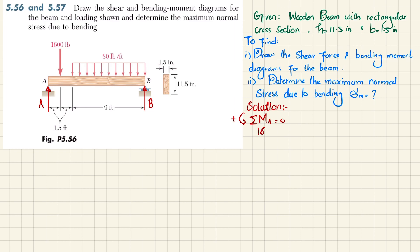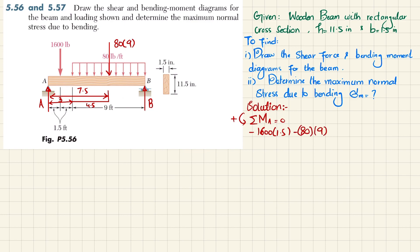Writing the moment equation: minus 1600 times 1.5 (the point load), minus 80 times 9 times 7.5 (the distributed load converted to a point load with its centroid at 7.5 feet from A), plus B times 12 equals zero.